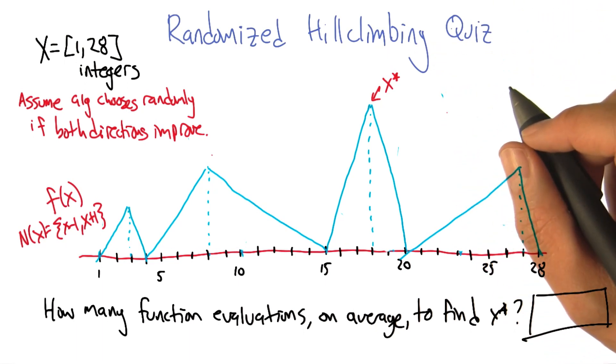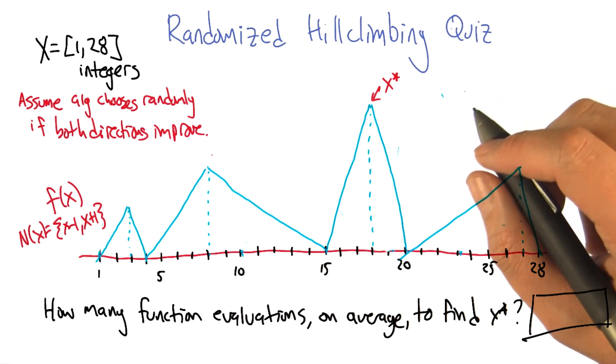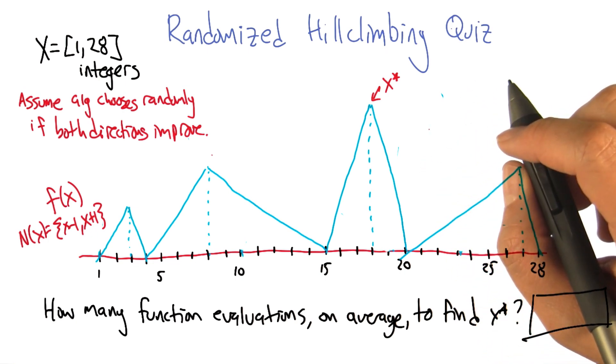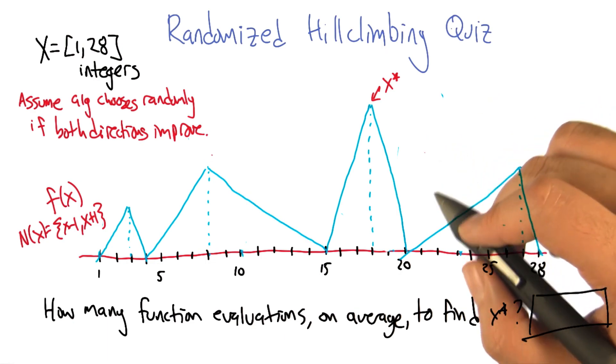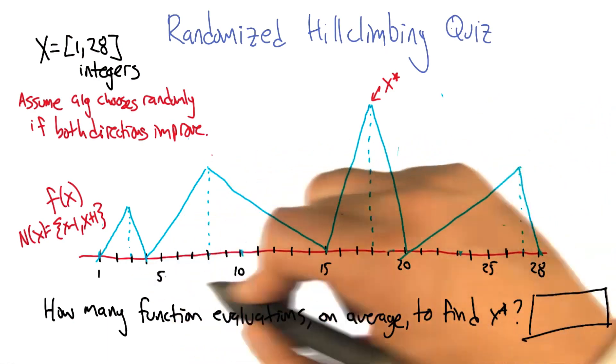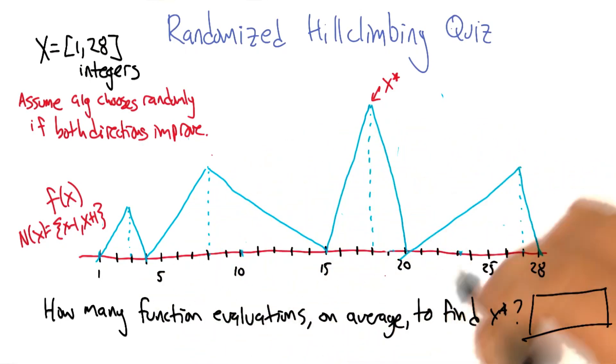So maybe you could write code to do this or maybe you could do it with math. This is probably a little bit more involved than most of our quizzes, but it should give you a chance to really dive in and get a feel for this notion that it matters where these basins of attraction are. All right, do you think that's clear enough to give it a shot? Sure. All right, let's go.